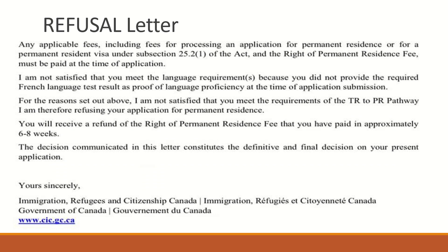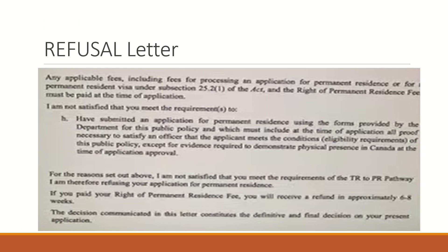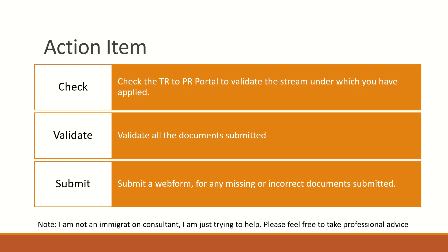Here is a sample of what a refusal letter looks like. It basically says you didn't apply in the right stream. For missing forms, the refusal letter states that the applicant submitted an application for permanent residency using forms provided by the department under this public policy, which must include at the time of application all proof necessary to satisfy that the applicant meets the conditions of the public policy — except the fee — including evidence to demonstrate physical presence in Canada at the time of application. The IRCC officer is not satisfied that the individual meets the requirement, as mandatory forms are missing.